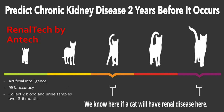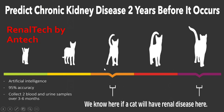One thing I found when studying this is that Antech Diagnostics has new technology called Renal Tech. In cats, it uses artificial intelligence to predict whether your cat is going to develop kidney disease in the next two years, with 95% accuracy. When you think about a cat's lifespan, two years is a lot of time to be taking preventive action. How it works: you do one blood sample and urine sample, then wait three to six months and do another, send those in, and they provide a predictive value indicating whether kidney disease is likely in the next few years.